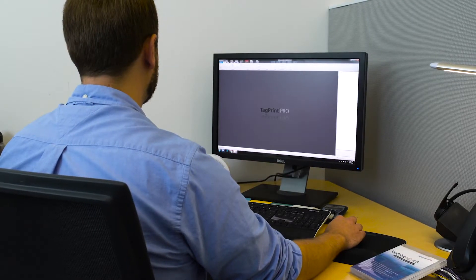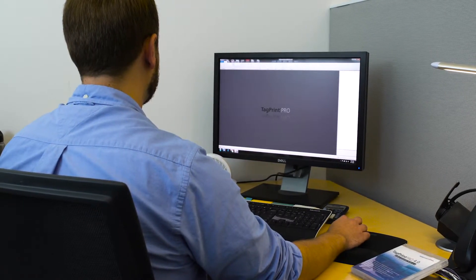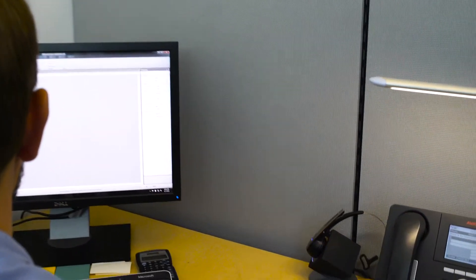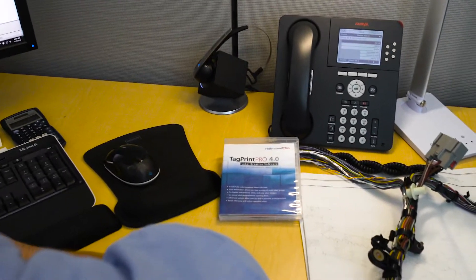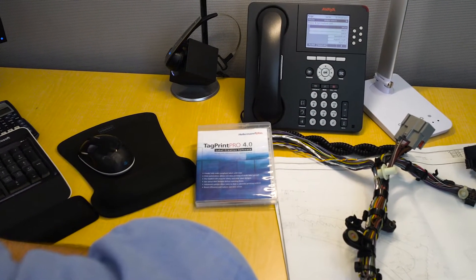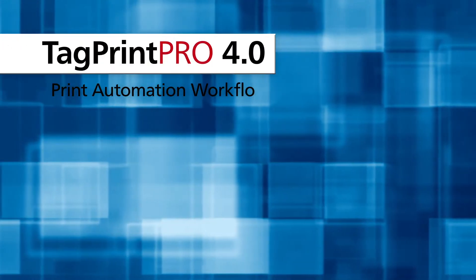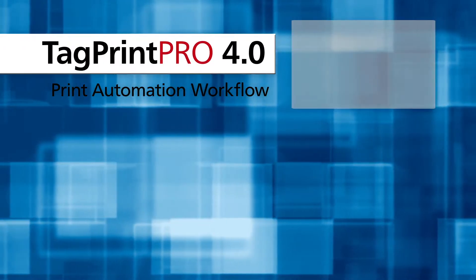The fix is easier than you might think. Hellermann-Titan's print automation, built into TagPrint Pro label creation software, moves label printing into the fast lane, saving you money while virtually eliminating costly mistakes and wasted time. Print automation is about defining a smarter workflow.